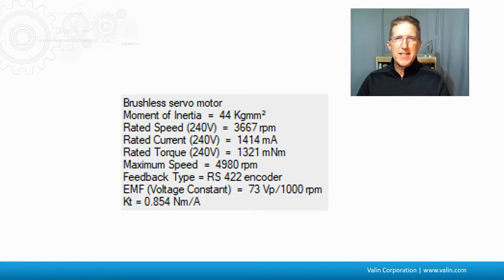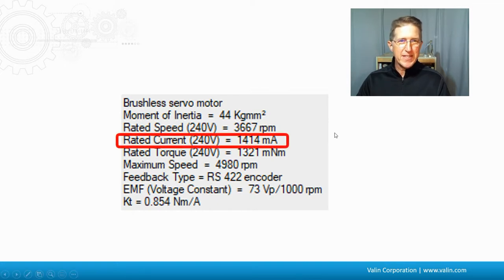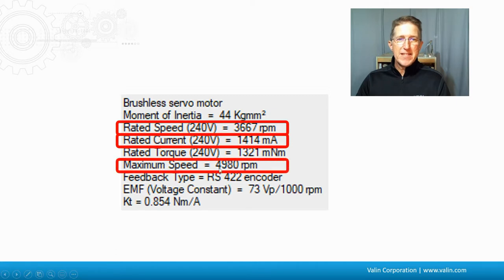Here are some specs that come from a motor configuration file and some software that I'm used to using. So if we take a look at the specs here, this motor here is rated with a current of 1.4 amps. It has a rated speed of 3,600 RPM. And then it has a maximum speed of 4,900 RPM, almost 5,000 RPM. Notice there's two different speeds here.